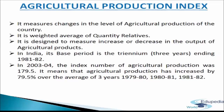Now we come to the Agriculture Production Index. The index number of agriculture production is a weighted average of quantity relatives and it provides a ready reckoner of the performance of the agriculture sector. Its base period is the triennium ending 1981–82. In 2003–04, the index number of agriculture production was 179.5, meaning that agriculture production increased by 79.5% over the average of the three years 1979–80, 1980–81, and 1981–82. Food grains have a weight of 62.92% in this index.